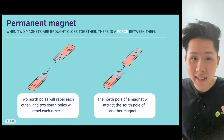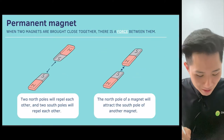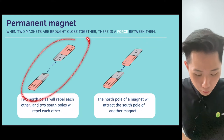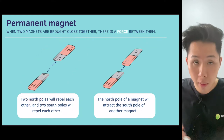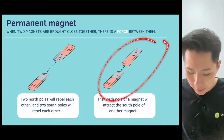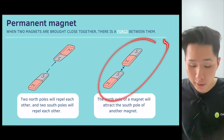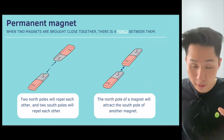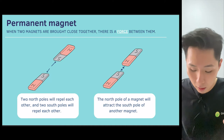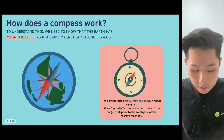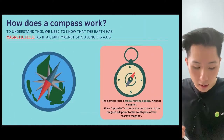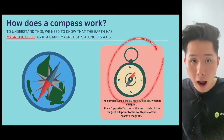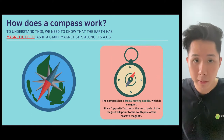Here is some very simple facts that everyone would know. When you put two north or south poles together, they will repel each other. When you put the opposite poles together, there's an attractive force between them. That's something characteristic of a permanent magnet. But knowing this, we can understand how a compass works.